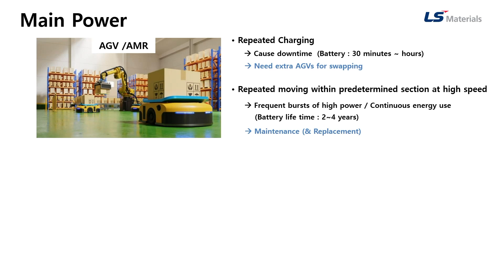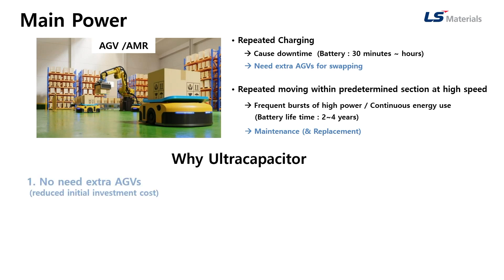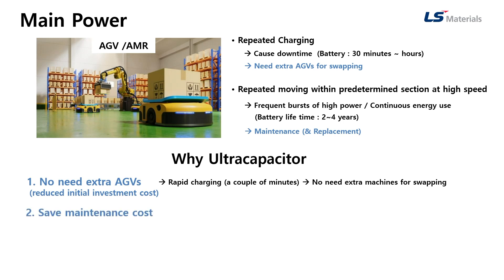So regular maintenance and replacement is required based on battery life cycle. Then why Ultra Capacitor? First, no need for extra AGVs, which means it could reduce initial investment costs. Thanks to Ultra Capacitor's rapid charging, downtime costs from charging can be reduced, so the number of required machines becomes less than with batteries. Second, it can save maintenance costs because Ultra Capacitor has a 10 to 15 year lifetime and 1 million cycles of charging and discharging, so the replacement cycle becomes much longer.